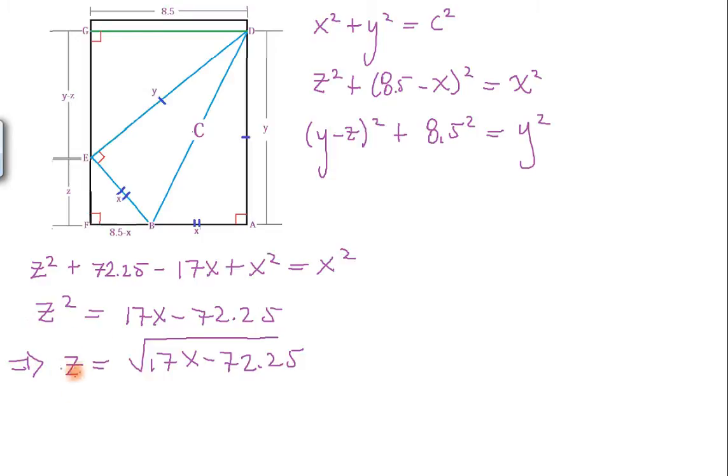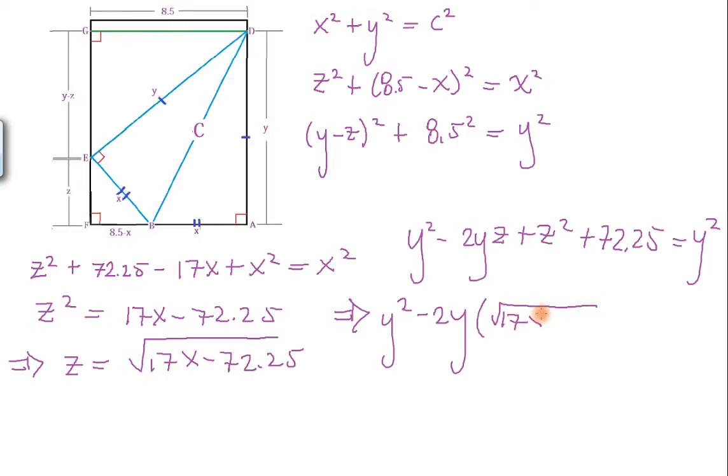Okay, now that we have Z and Z squared, let's use this other equation. If we expand this, we get Y squared minus 2YZ plus Z squared plus 72.25 equals Y squared. Now, what is Z and what is Z squared? Well, we already have these terms right here. So let's substitute.